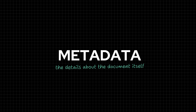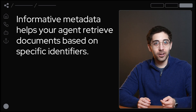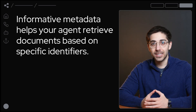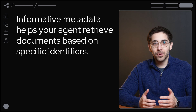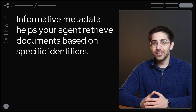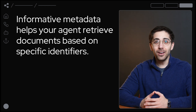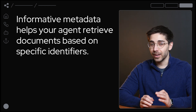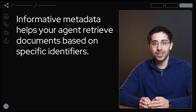Let's start with metadata. This refers to the details about the document itself — think of things like titles, authors, dates, and topics. Including this information can be extremely valuable because it helps your agent retrieve documents and answers based on these specific identifiers. For example, if a user searches for a topic covered by a certain author, having this metadata embedded allows the agent to pinpoint the correct document and the correct section much faster.